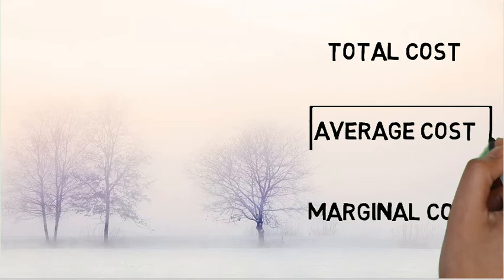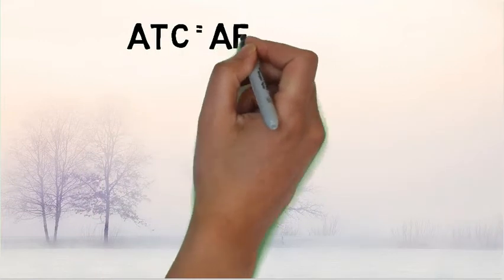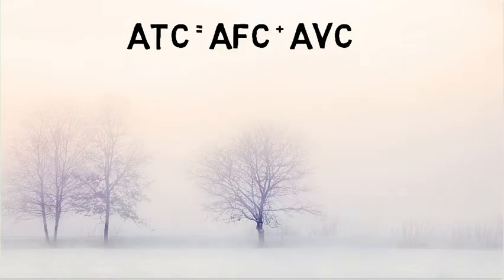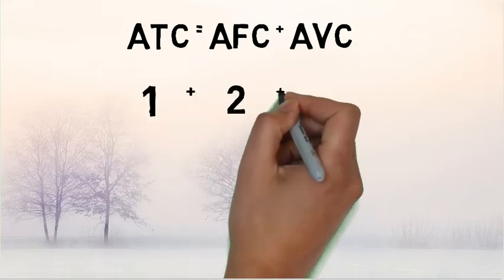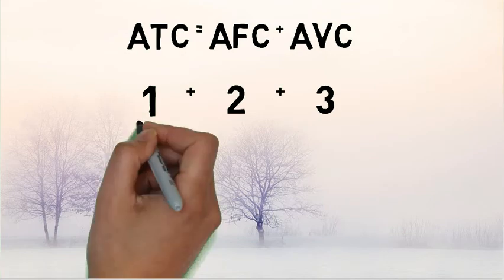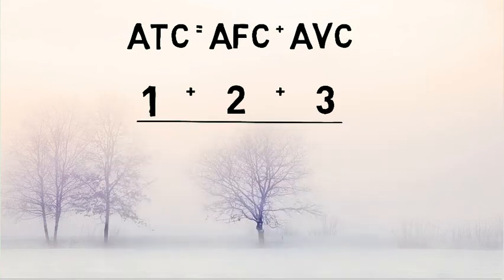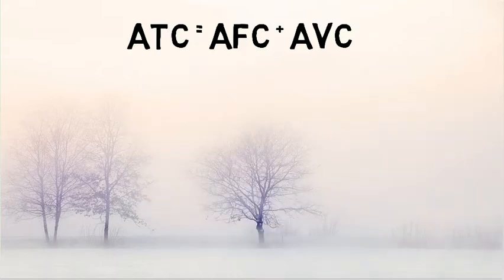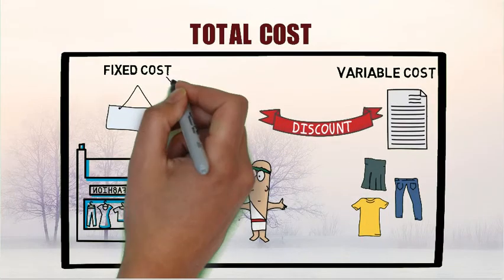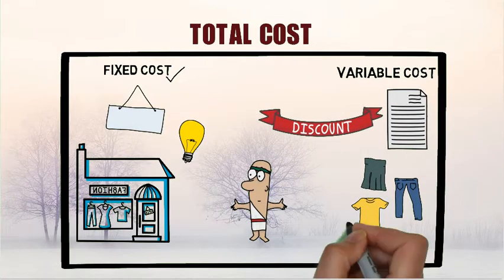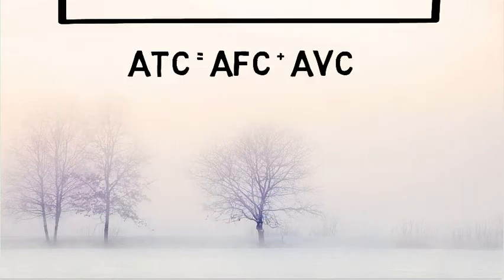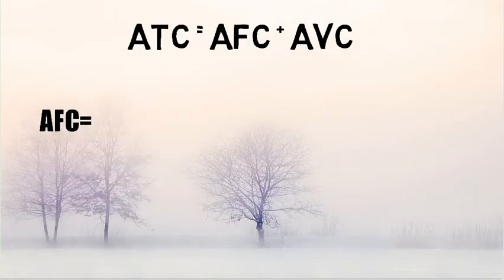Like Total Cost, Average Cost is also divided into two parts, the Average Fixed Cost and the Average Variable Cost. How do you average anything? You just sum all the elements and divide it by the number of elements. Well, that is what you do over here. You take Total Fixed Cost and divide it by the output that you have produced, thus giving you the Average Fixed Cost.